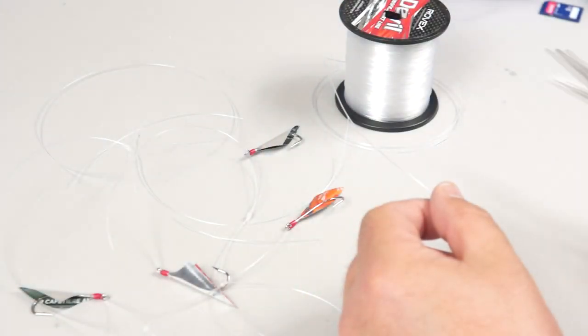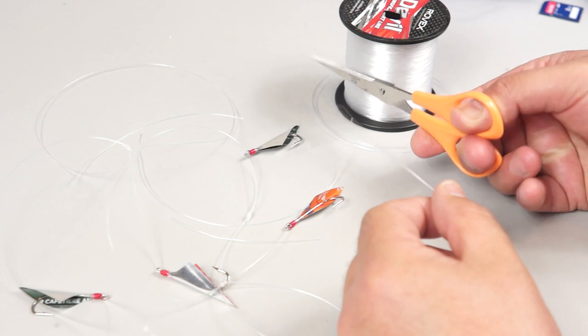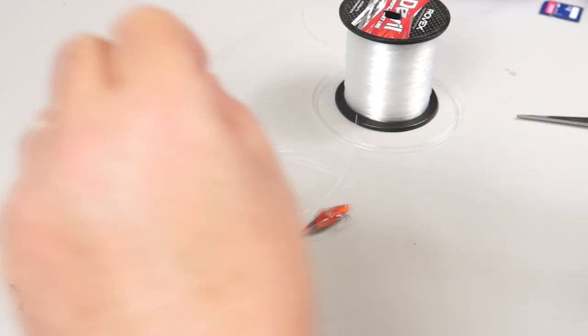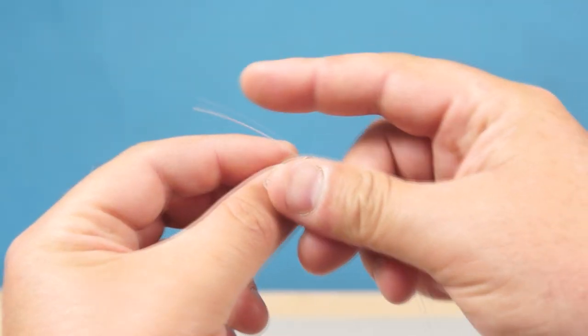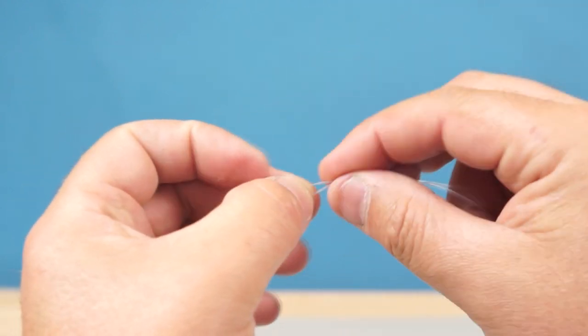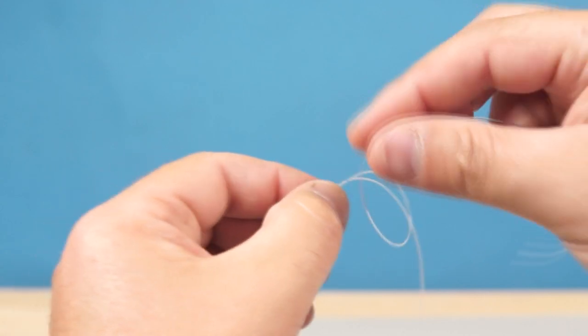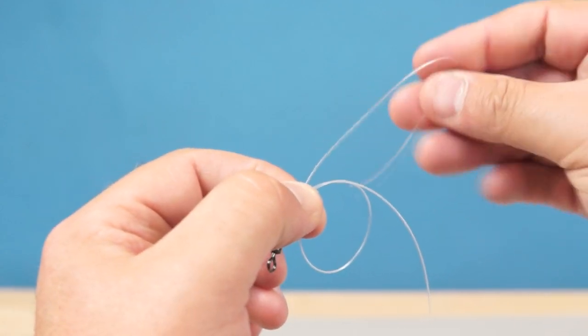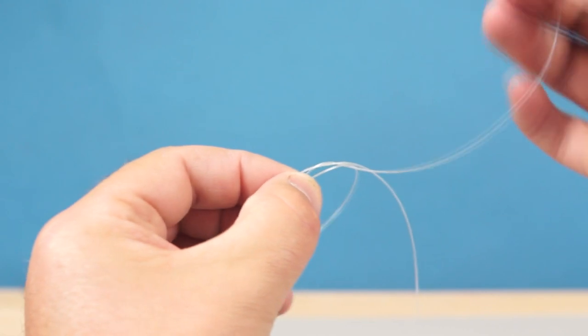And then the rig can be cut free of the spool about a foot up from the last branch. To finish the top of the rig I'm going to tie on a barrel swivel at the cut end. Using a uni knot again I can space this 10 inches up from the top branch.